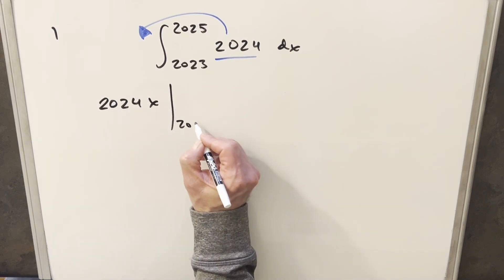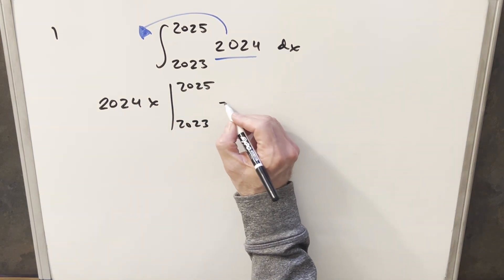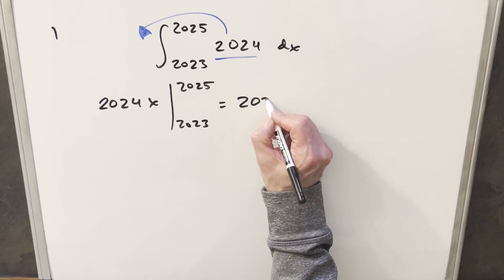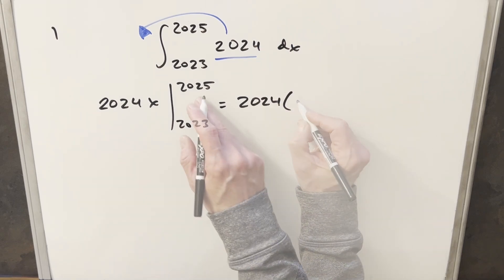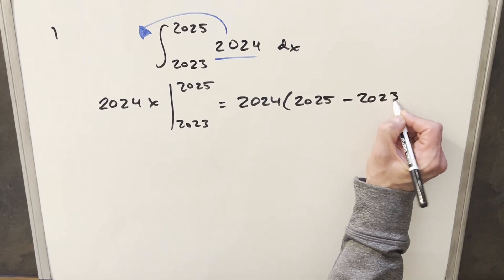And we just need to evaluate it from 2023 to 2025. And then plugging everything in, we're going to have 2024 times the upper bound 2025 minus the lower bound 2023.